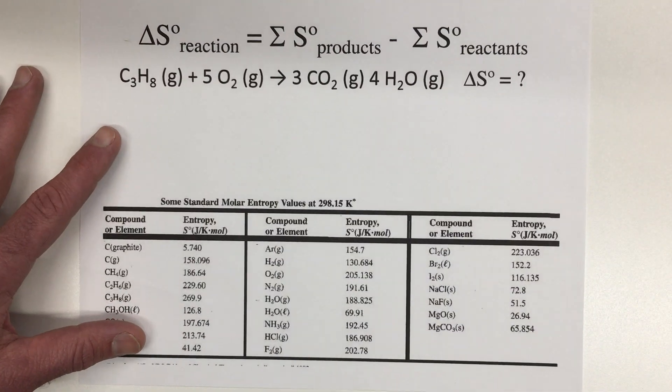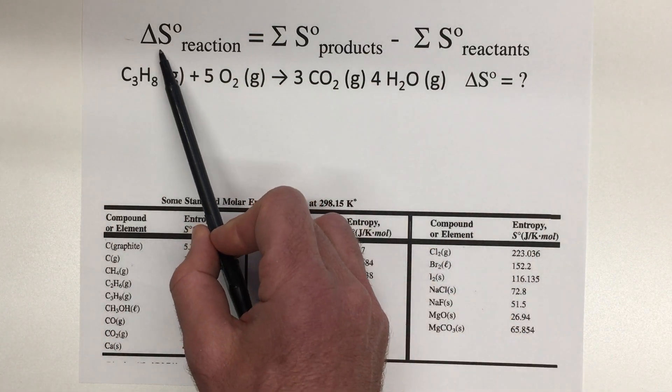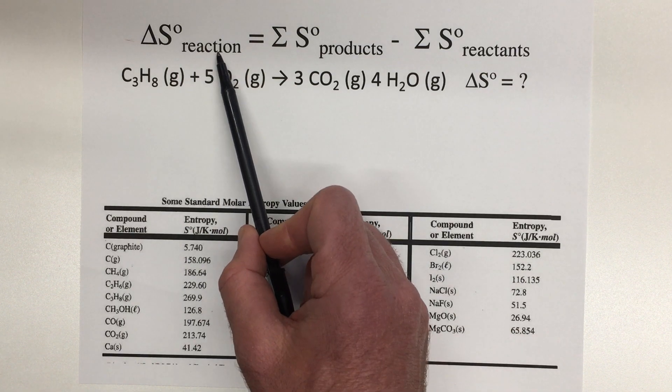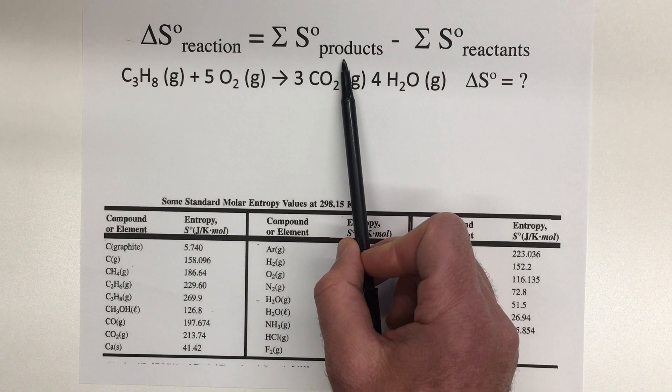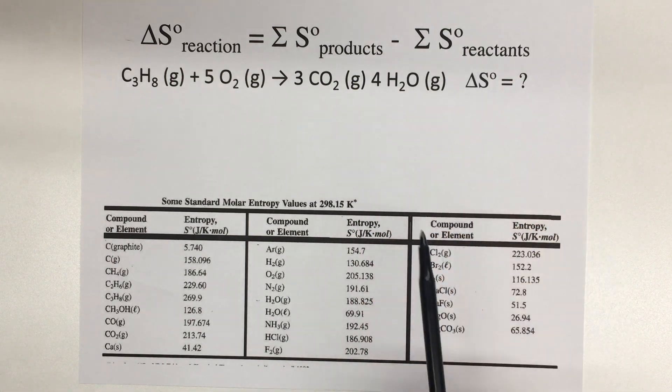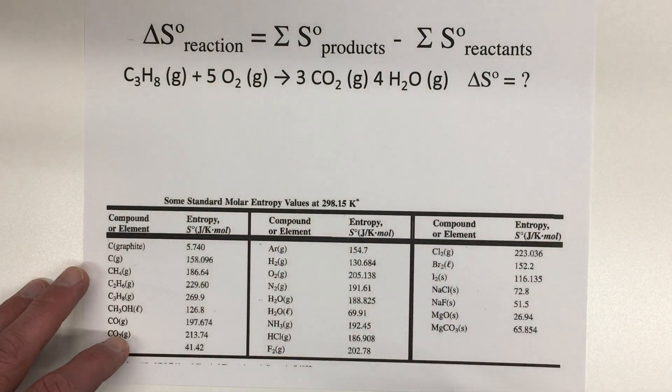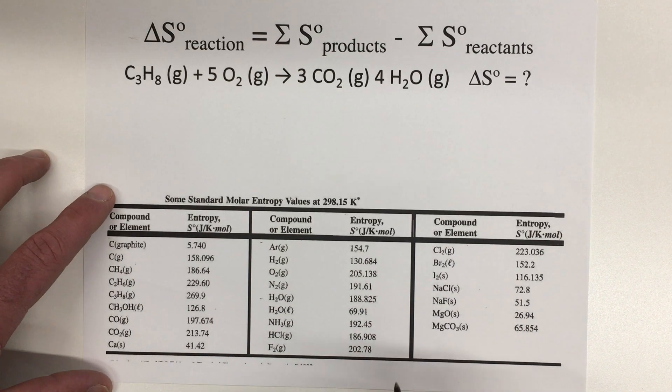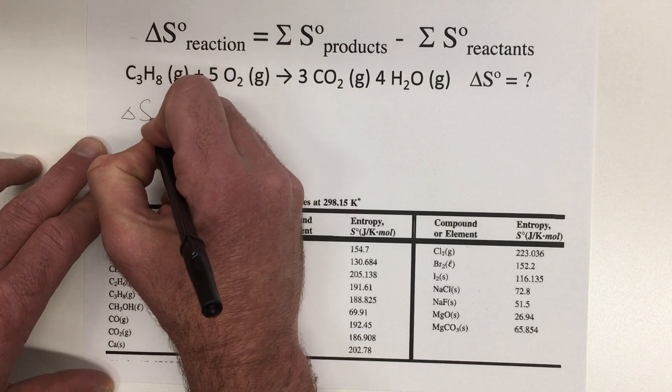And so if we use this equation, we can find the entropy change of a reaction at standard conditions. And so for the reaction, it's going to be equal to the sum of the standard molar entropies of all your products minus the sum of all your standard molar entropies of your reactants. And so here's an example right here that we want to find the entropy change for, and we have our table of standard values down here.